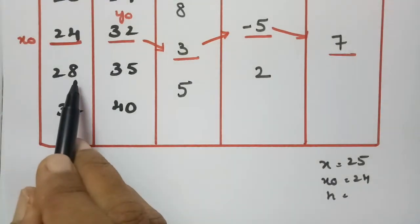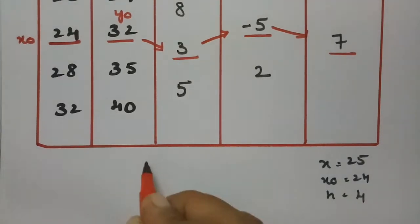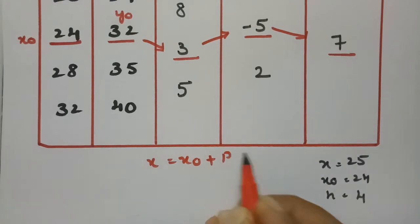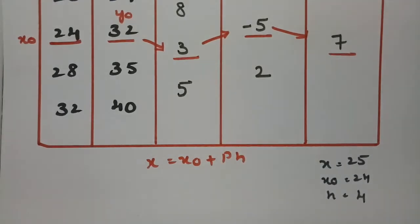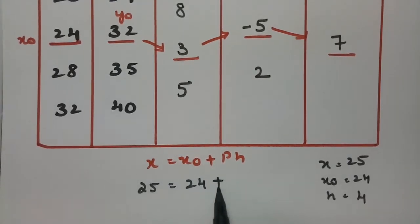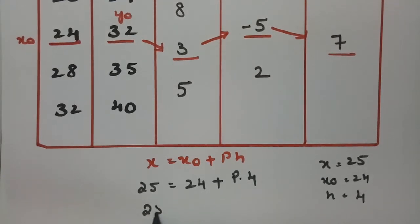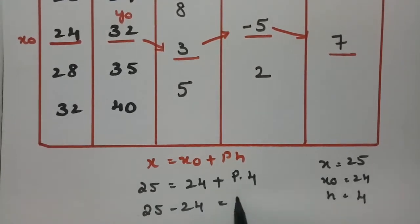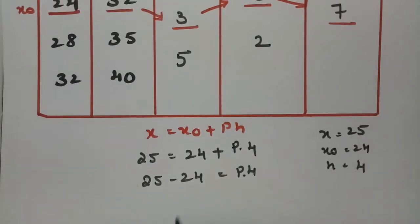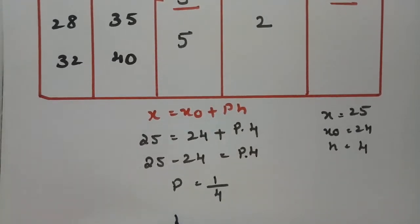x naught is equal to 24, and h — the difference between consecutive x values — is 4. In the formula, x equals x naught plus p times h. So, 25 equals 24 plus p times 4, giving 1 equals 4p, and therefore p equals 1 divided by 4, which is 0.25.